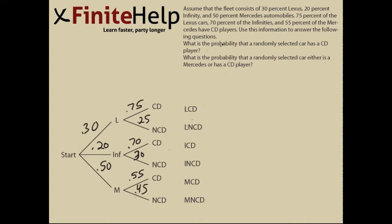For the first part of the problem, it asks: what is the probability that a randomly selected car has a CD player? We need to find all the outcomes that involve the car having a CD player—Lexus CD player, Infinity CD player, and Mercedes CD player. After finding their values, we'll add them together, and that will be the overall probability that a randomly selected car has a CD player.